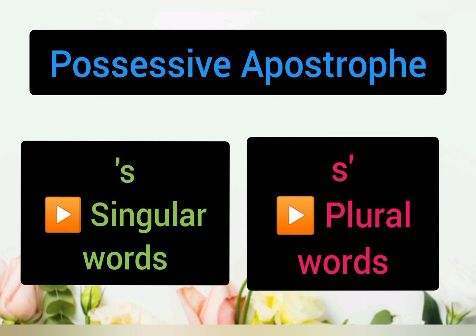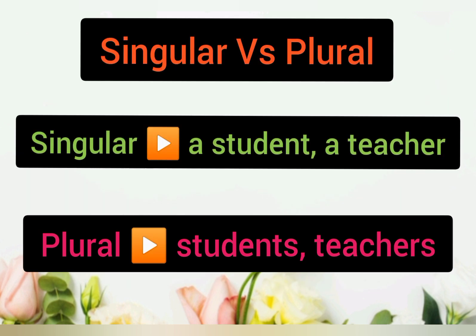And for plural words, usually they will have S at the back, so we just add an apostrophe after the S. A student, a teacher — singular. But when there are more than one, we call it students, teachers.